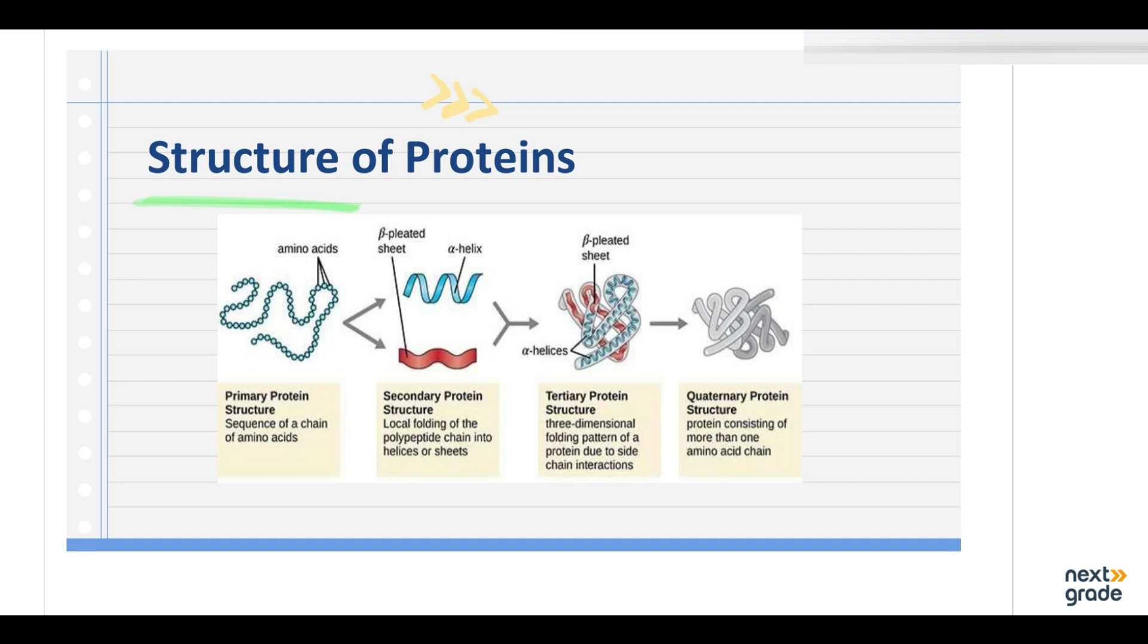After that, there is a structure of protein. Proteins exist in 4 structures. First of all, primary structure of protein, these are the simple chains of amino acids. After that, secondary, this is alpha helix or some helical shape or we look at sheets in its form. It looks like a tertiary structure with three-dimensional folding pattern. After that, the fourth type is a quaternary protein structure where more than one amino acid chains. So protein exists in four structures.